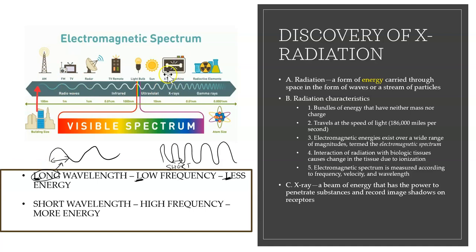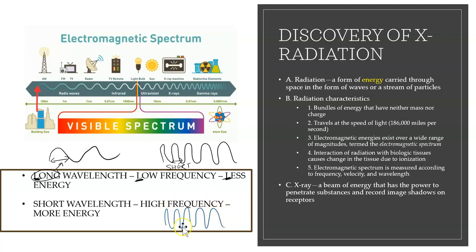When we look at x-ray machines, we see short wavelength — the distance from one wavelength to the other is short — which means high frequency. High frequency means there are many waves clustered together. When we have high frequency, a lot more energy is needed to create these radiation waves.